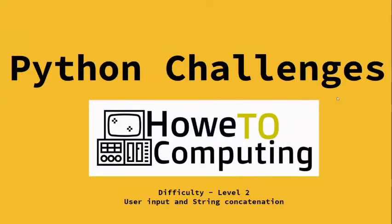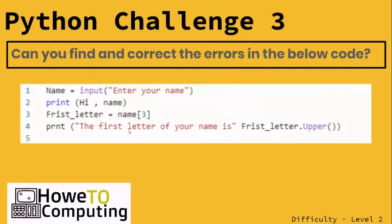Okay, welcome to Python challenges. This is difficulty level two, so we're going to go through these challenges and the answers. This is mainly focused on user inputs and string concatenation. It's challenge three: can you find and correct the errors in the code?